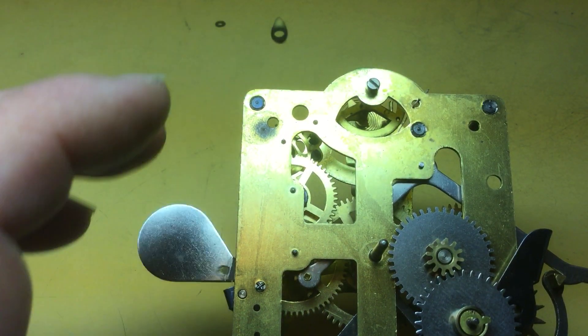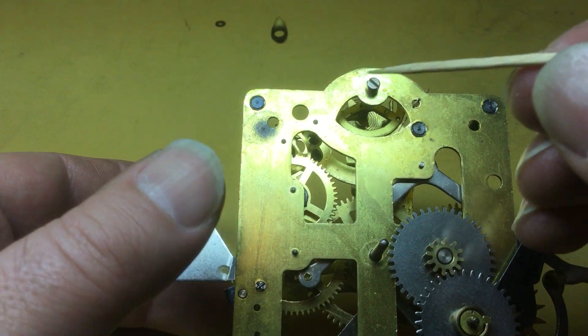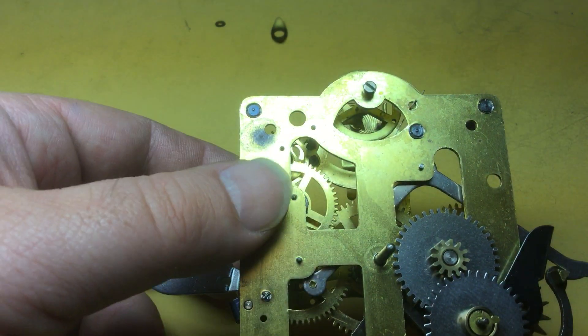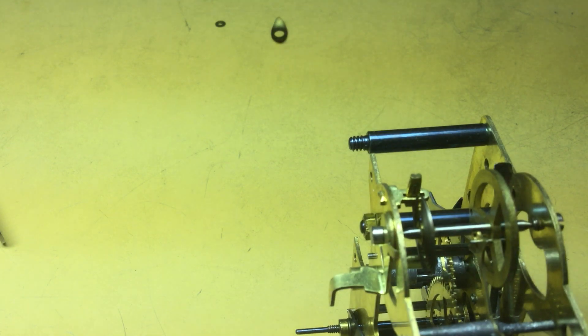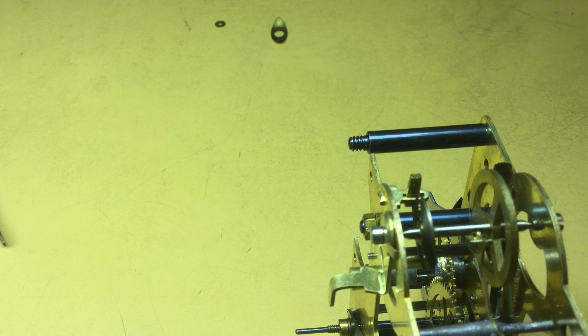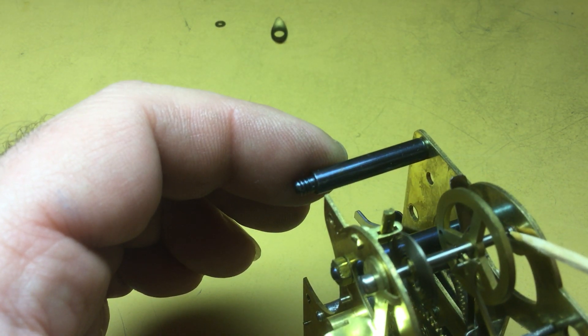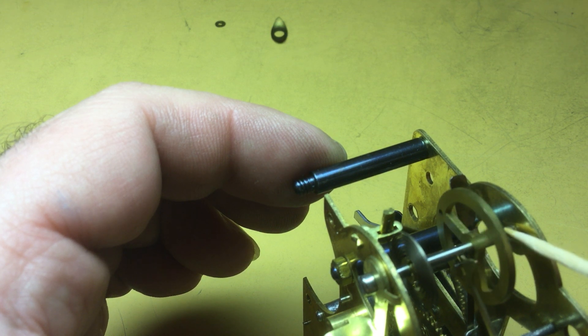Okay. This pivot is for the lever and it does not receive any oil. But we do place a drop of oil on each end of the balance wheel.